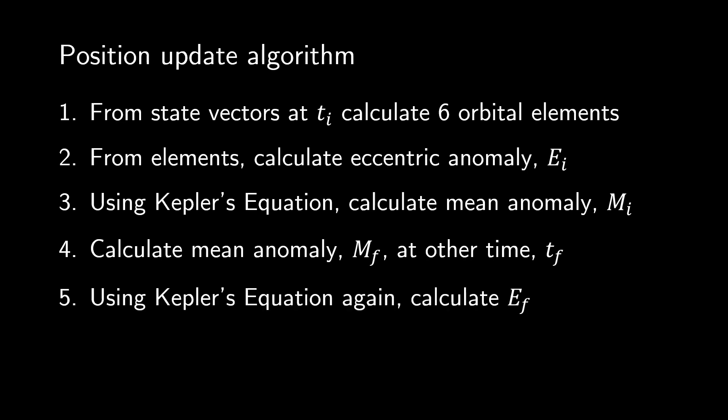Now we basically step backwards through the process we just went through. Given M final, we can get E final. Given E final, we can calculate the updated true anomaly. After all, the other five elements will not change for a stable orbit.